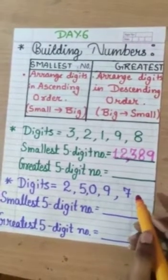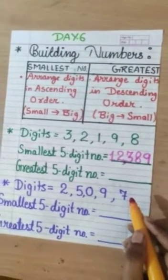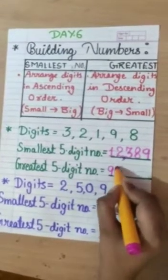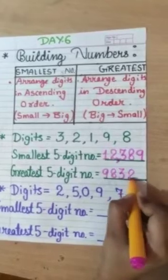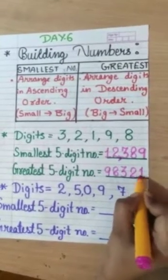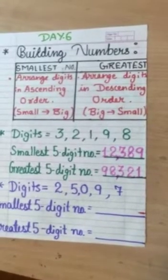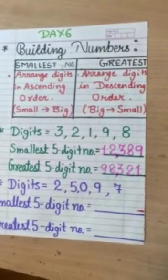We have to arrange in descending order. The biggest number, biggest one digit will come at the first place. Like it is 9, then 8, then 3, 2, 1.